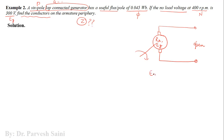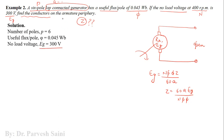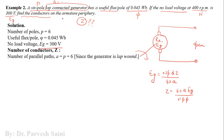Using the same equation Eg = (N × P × phi × Z) / (60 × A), we rearrange to find Z = (60 × A × Eg) / (N × P × phi). Given: number of poles = 6, useful flux per pole = 0.045 weber, Eg = 300 volts, speed N = 400 rpm.